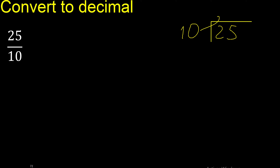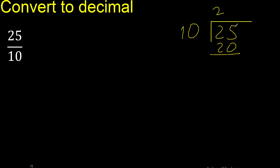Multiply by which number is nearest to 25 but not greater? Multiply by 3 is 30, which is greater. Therefore multiply by 2 is 20. Subtract: the remainder is 5. There is no number that goes down.